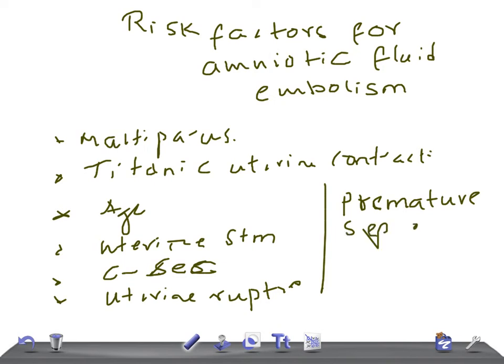Additional risk factors include uterine rupture, premature separation of the placenta, and intrauterine fetal death (IUD). If these are present, they are risk factors for developing amniotic fluid embolism. Thank you so much for watching this video. Take care.